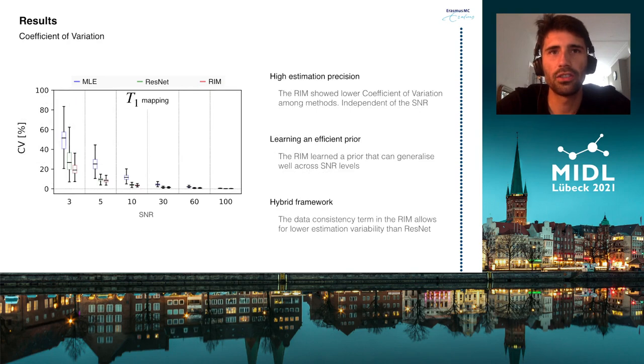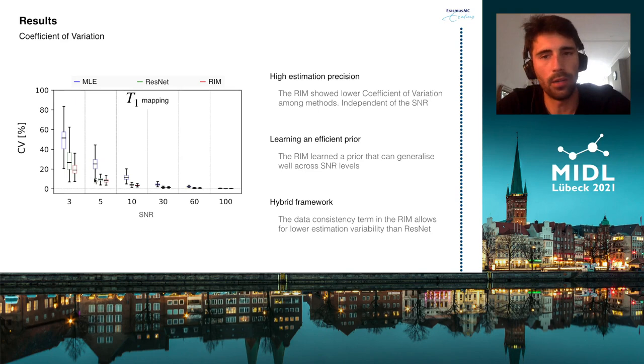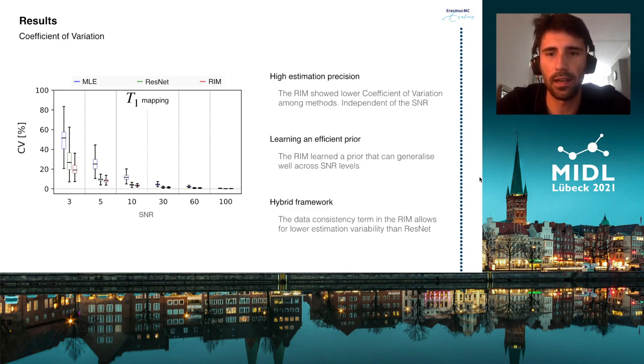The second figure shows the coefficient of variation for the same data. The RIM presented lower CV, or higher precision, than the other methods, independently of the SNR level.